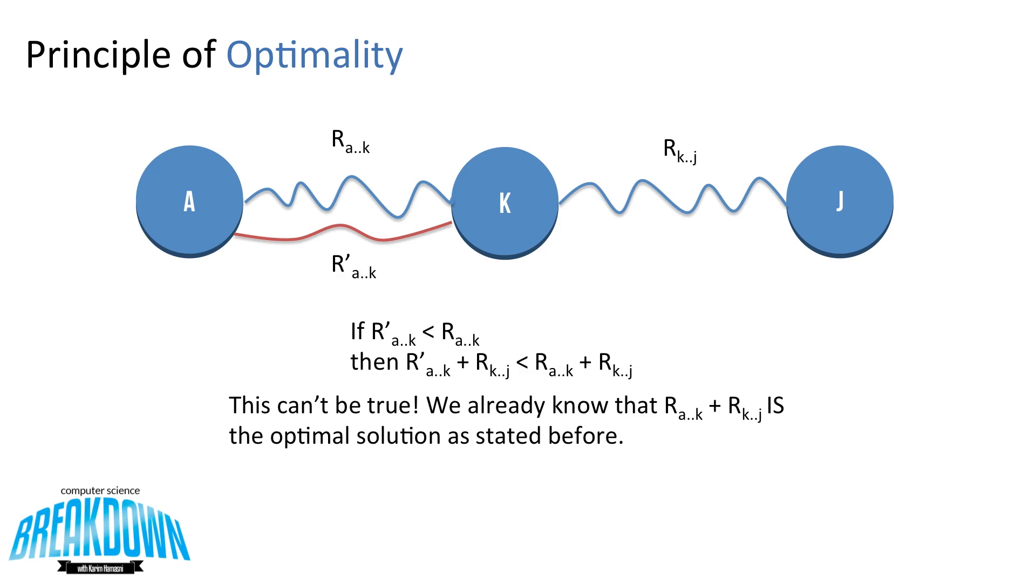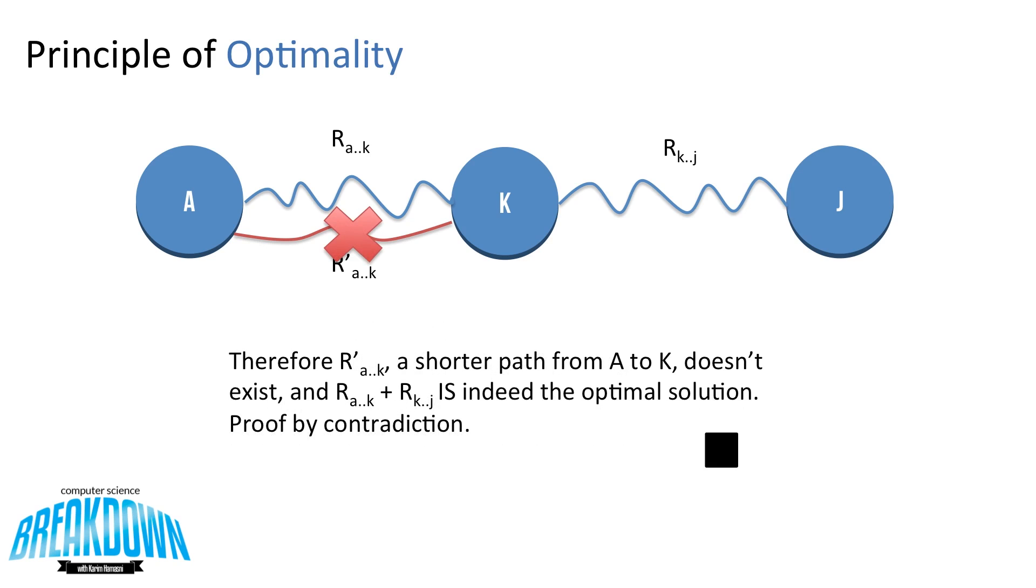But this can't be true. We already know that R A to K plus R K to J is the optimal solution as stated before. Therefore, R' A to K, a shorter path from A to K, doesn't exist, and R A to K plus R K to J is indeed the optimal solution. This is proven by contradiction.